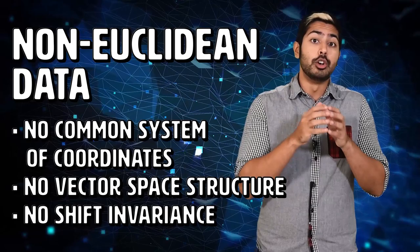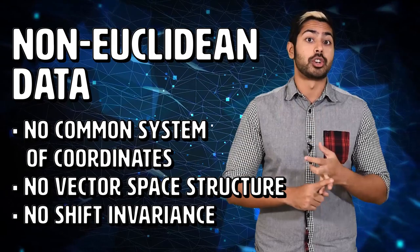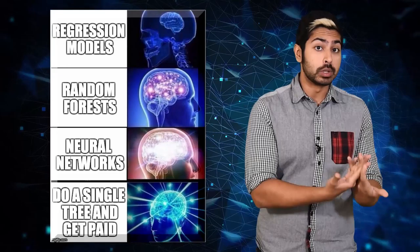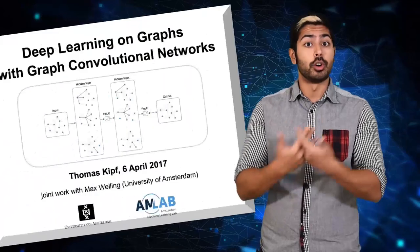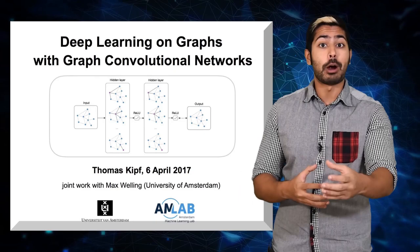The non-Euclidean nature of this data implies that there are no familiar properties like a common system of coordinates, vector space structure, or shift invariance. We need a neural architecture that can learn from non-Euclidean data with the kind of accuracy that CNNs give us for Euclidean data. Enter the graph convolutional network, or GCN.